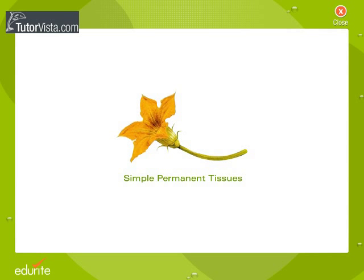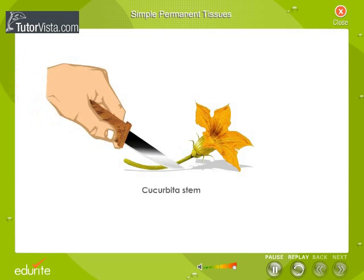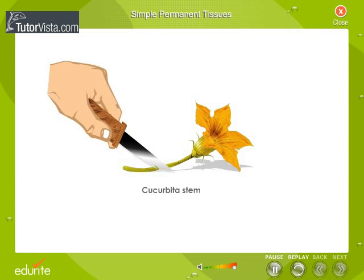Simple Permanent Tissues. Take a piece of Cucurbita stem. Cut thin transverse sections of the stem.